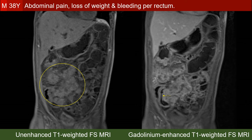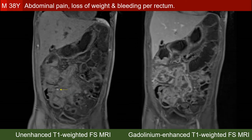Here we have the unenhanced and gadolinium-enhanced T1-weighted fat-saturated MRI. The arrow points to the terminal ileum, which is involved in the disease process by wall thickening and lesions along its medial aspect. On the unenhanced image, the lesions are quite bright, and we see even brighter spots within the lesion on the unenhanced T1-weighted fat-saturated MRI.